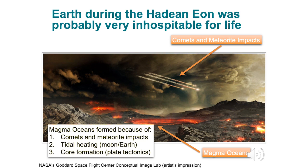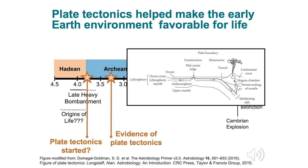Another cause is core formation, where comet and meteorite impacts deposit metals onto the surface of the Earth, and this will begin sinking towards the inner layers of the Earth, helping to form the Earth's core. This process is known as plate tectonics — Earth has a thin surface layer which is cracked and can move around. This is the reason for earthquakes, and it is also essentially the recycling of Earth's surface with the inner parts of the Earth.